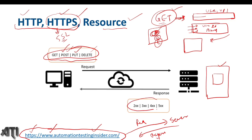Now if you talk about responses — we have seen this in the last video as well. The 200 series is for OK, 300 is for redirection, 400 is for client-side errors, and 500 is for server-side errors. These are status codes we receive in the form of a response — like 200 means OK. I'll create a separate video to discuss all the different status codes in detail.